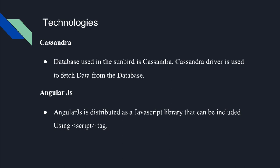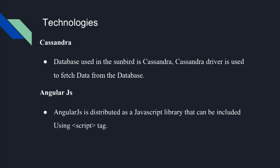Cassandra is the database used in Sunbird, and the Cassandra driver is used to access it. We used AngularJS to create the report views on the front-end side. NodeJS was used to create the data APIs. The cluster module in NodeJS was used to increase the throughput of the system. ExpressJS is a library used to create a server that accepts incoming requests.